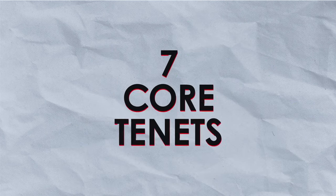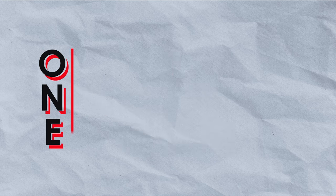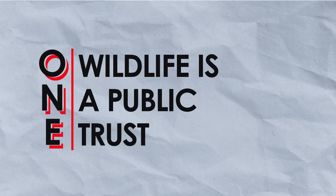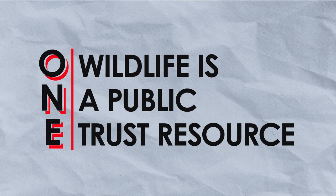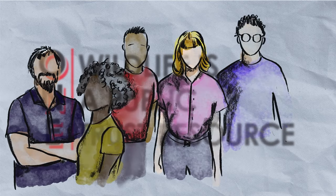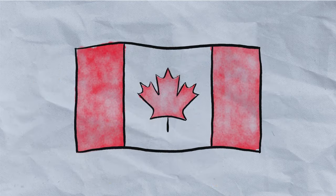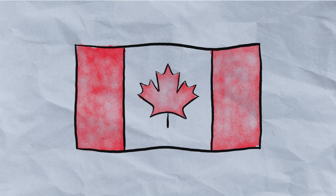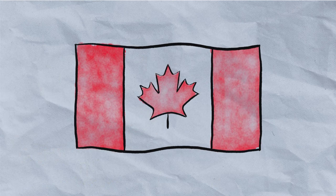There are seven core tenets to the North American model of wildlife conservation. One: wildlife is a public trust resource. In Canada, wildlife is cared for by the public through provincial and federal governments — it is available to us all.